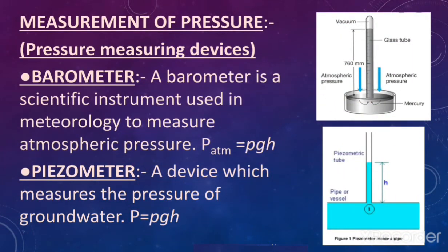Coming to the measurement of pressure, we have pressure measuring devices: barometers, piezometers, and manometers. A barometer is a scientific instrument used in meteorology to measure atmospheric pressure, calculated by p_atm = ρgh. A piezometer is a device which measures the pressure of groundwater: P = ρgh.